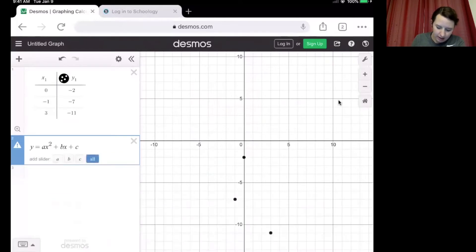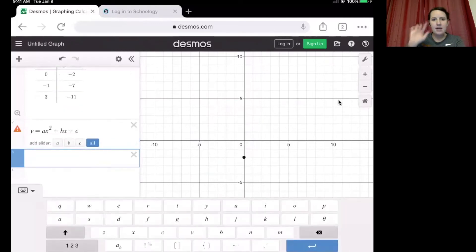And you're going to see that over here on the left-hand side, we have that orange triangle telling us that we have some sort of error in our equation.